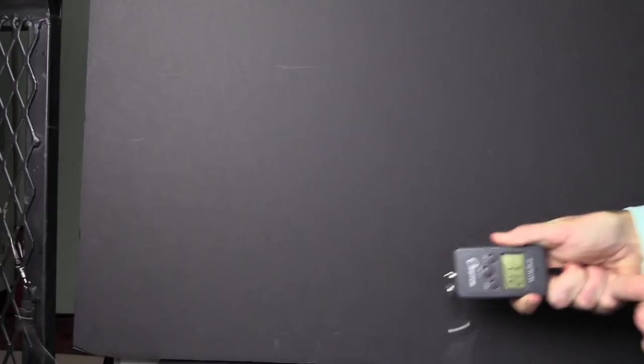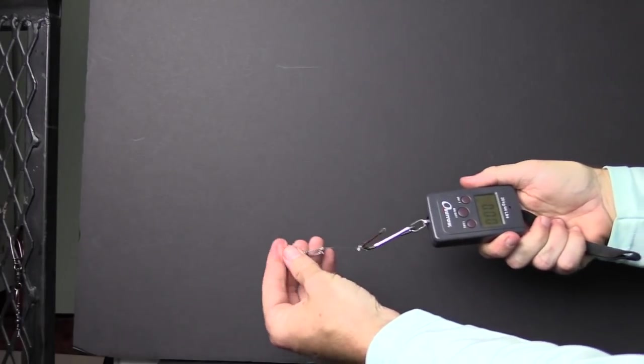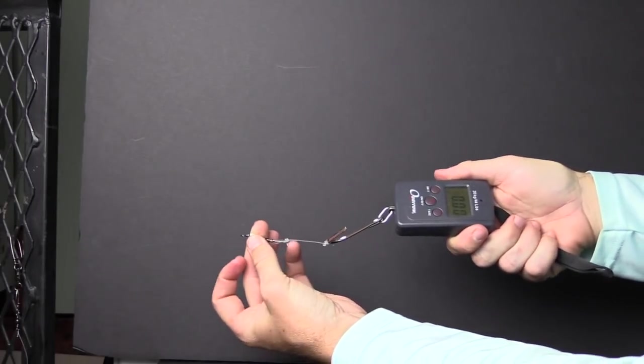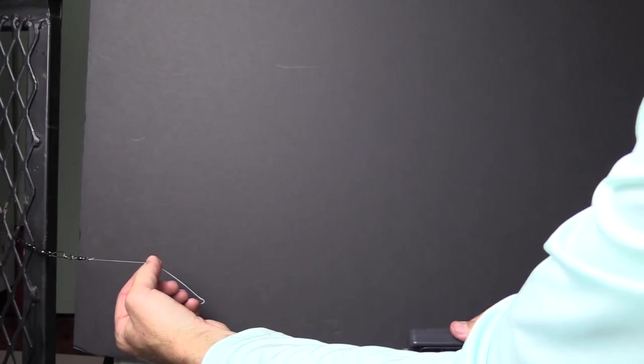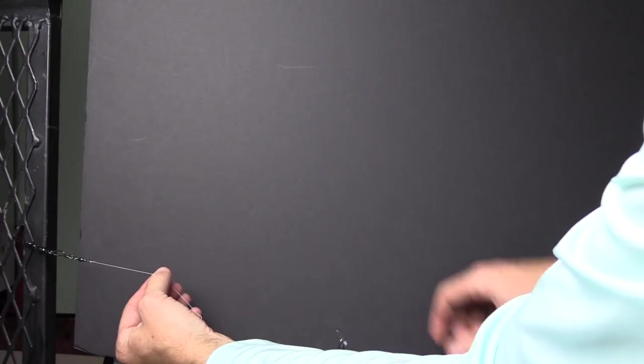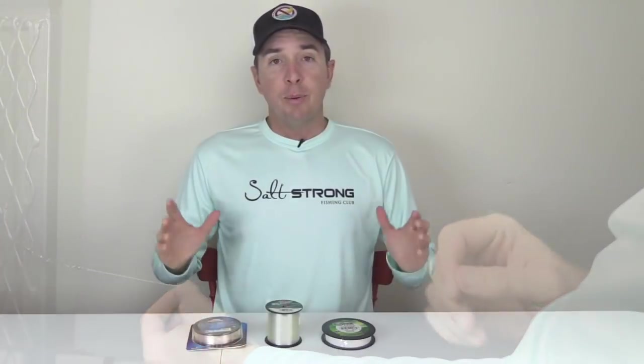Five, six, seven - yeah, that was seven pounds. I was going slowly and it totally unraveled. The clinch knot came unraveled, so definitely for braid I would say the uni knot is stronger.